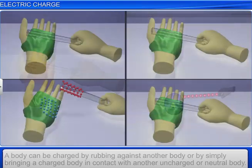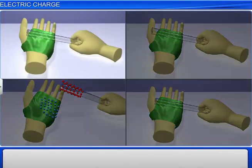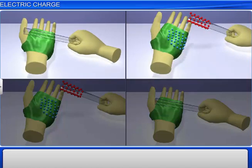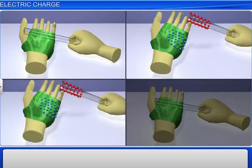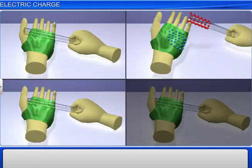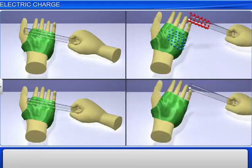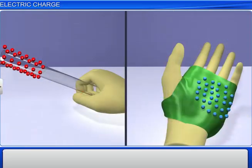When the glass rod and silk cloth were first rubbed, they get electrified. But when they are brought in contact again and separated, they lose their electrification or charge and are neutralized. Hence, we can conclude that one of them may be positively charged and the other negatively charged when they are rubbed against each other.